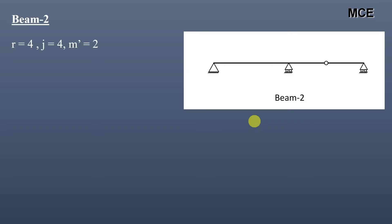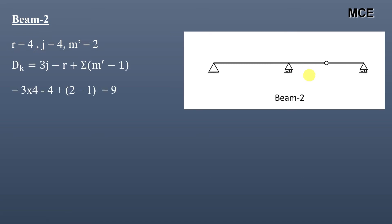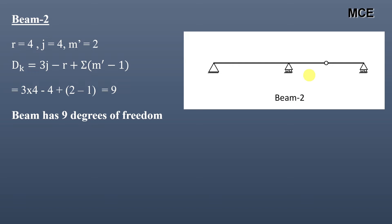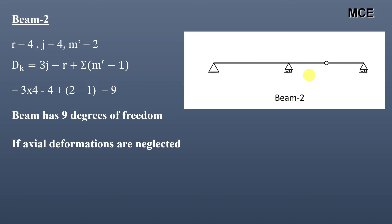For beam two, there are four reactions and four joints: one, two, three, and four. There is one internal hinge in the beam, and the number of members meeting at this internal hinge is two, so m′ = 2. The value of dk = 9, meaning the beam has nine degrees of freedom. If axial deformations are neglected, this beam has two members, so dk = 9 − 2 = 7.